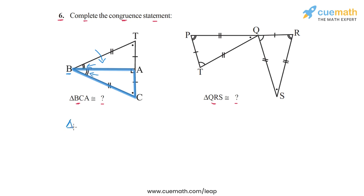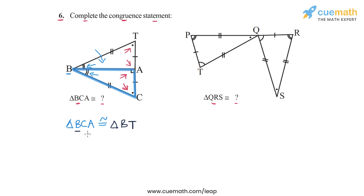Let's complete the congruence relation by writing the vertices one by one. In triangle BCA, corresponding to B we write B for the second triangle. Corresponding to C, since angle BCA equals angle BTA, we write T. Finally, corresponding to A in triangle BCA we have A in triangle BTA as well. So triangle BCA is congruent to triangle BTA.